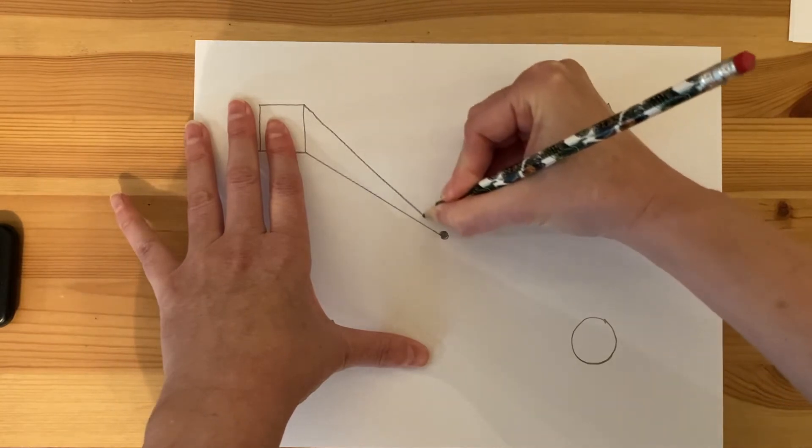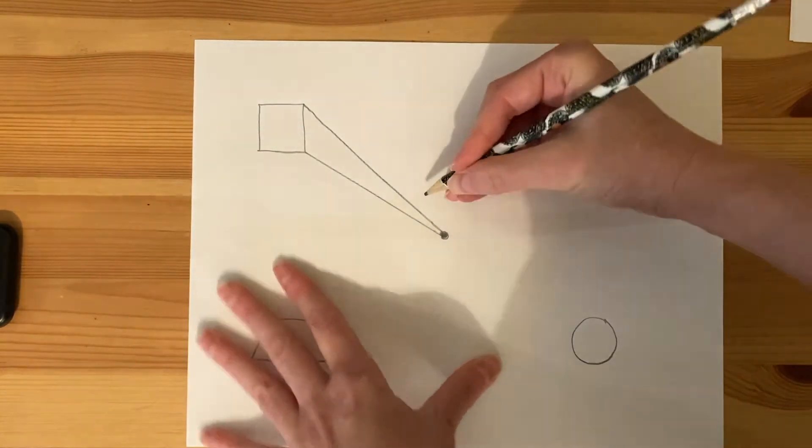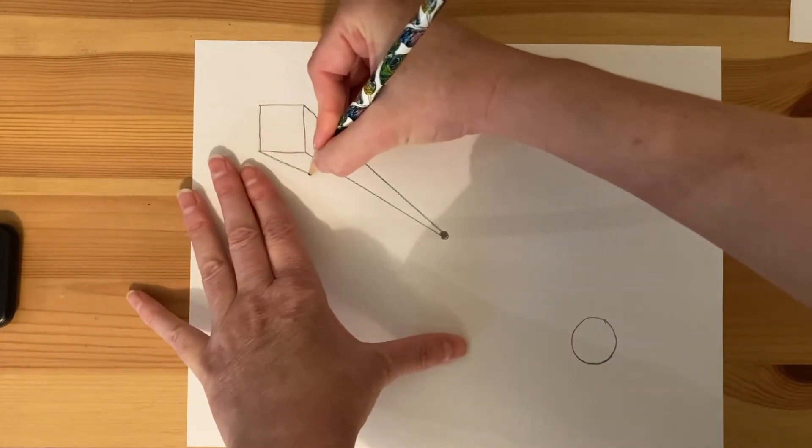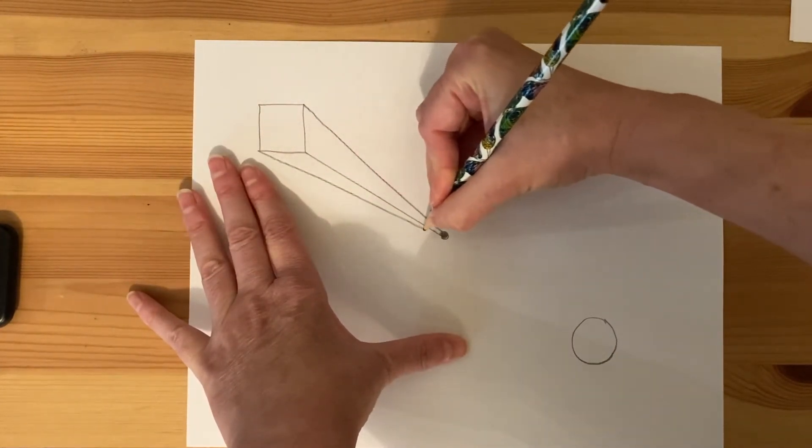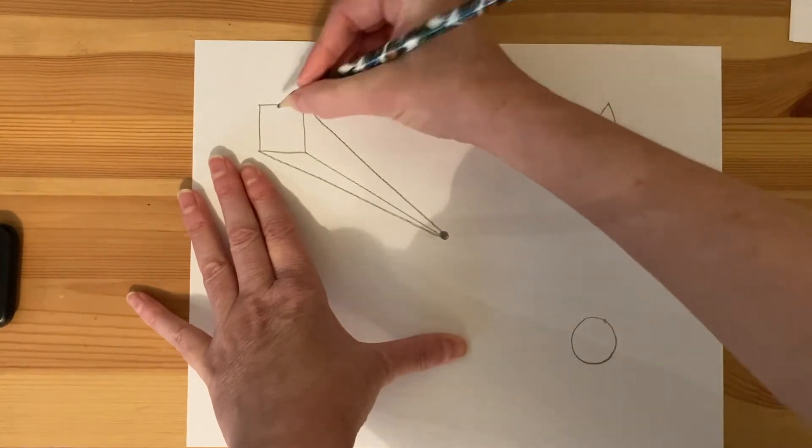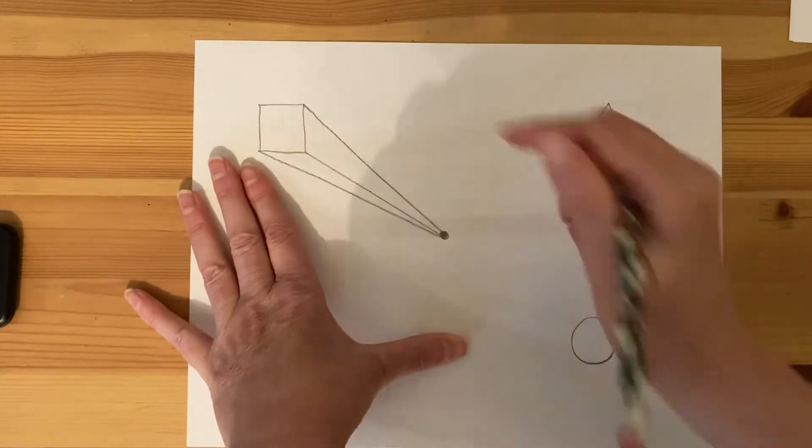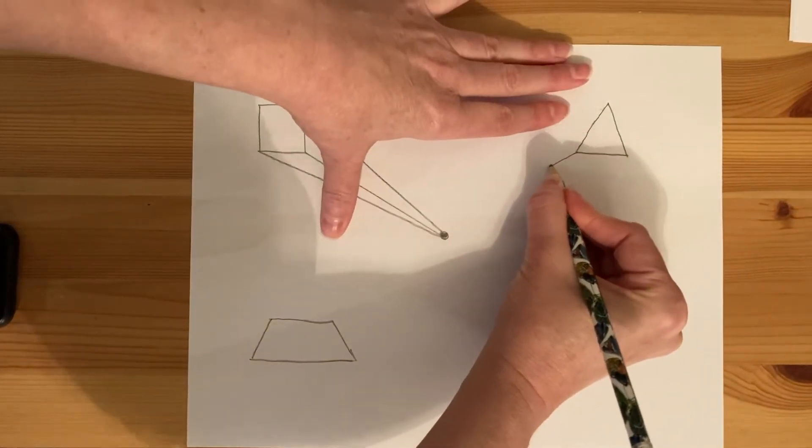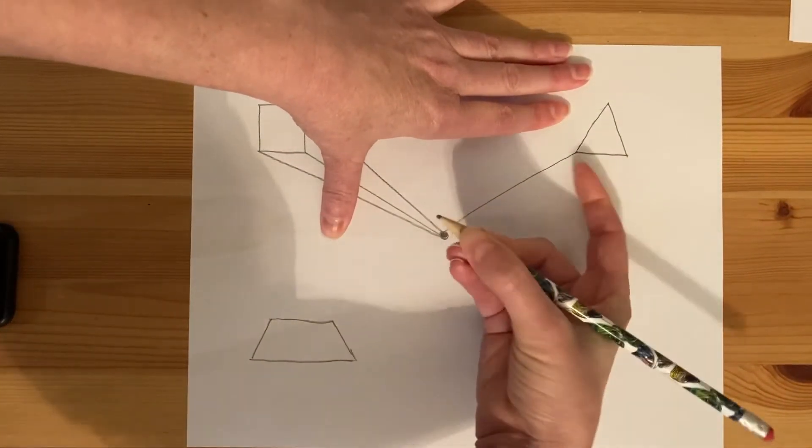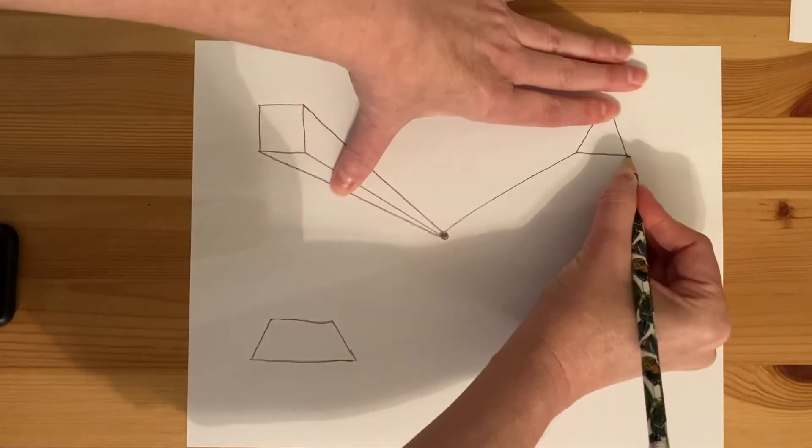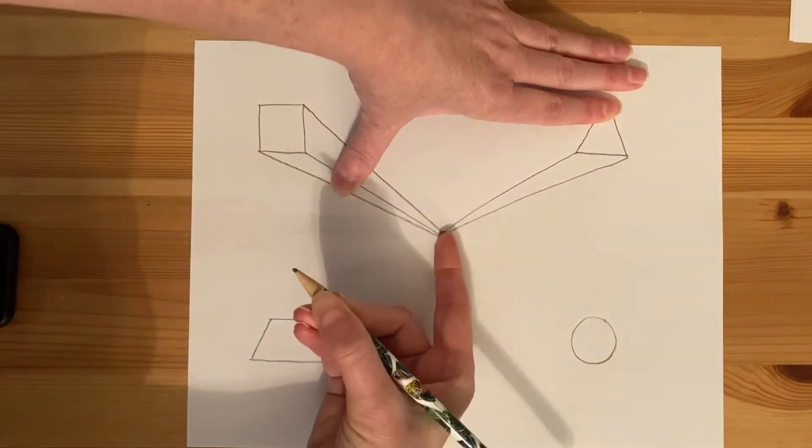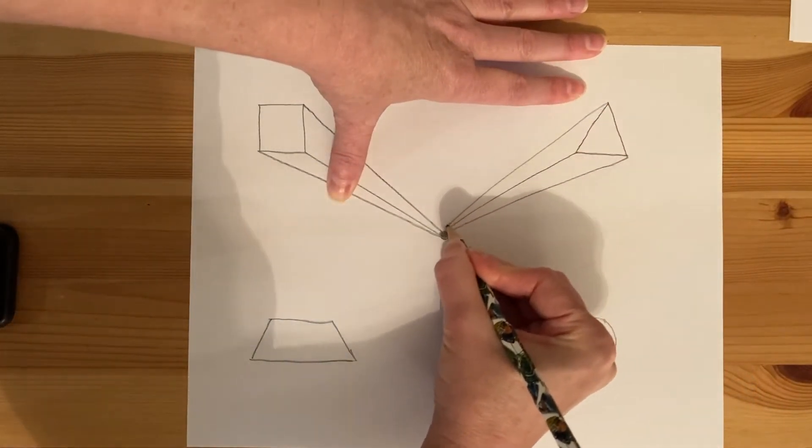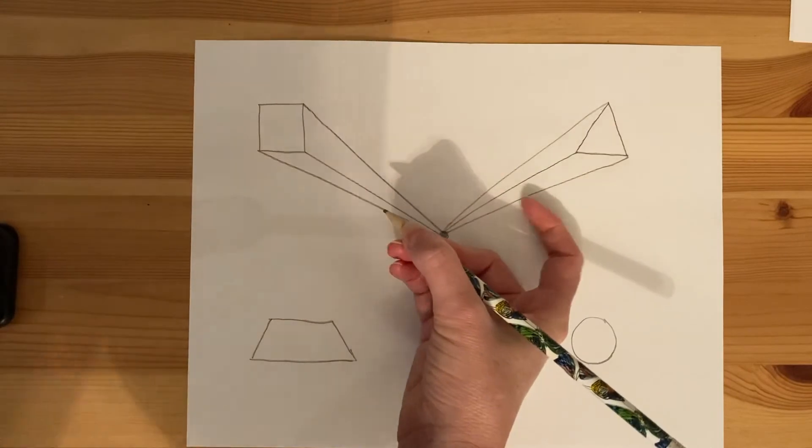You want to just try and do it nice and slow nice straight line so I've got two points here right now I'm using a square which will become a cube nice and straight down to my point. Now you could do this point too but I'm not going to do that because you can't really see it and now to my triangle, best I can nice straight line to my point. So every point of your shape goes to the vanishing point and you'll start to see that your shapes kind of start to look three-dimensional.